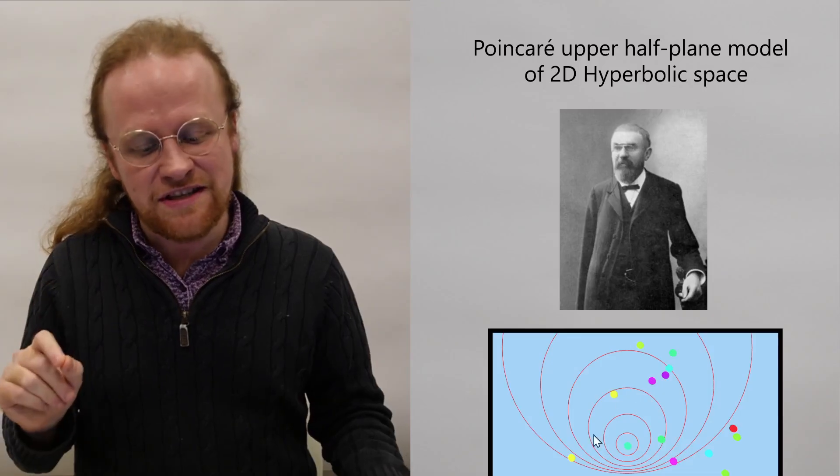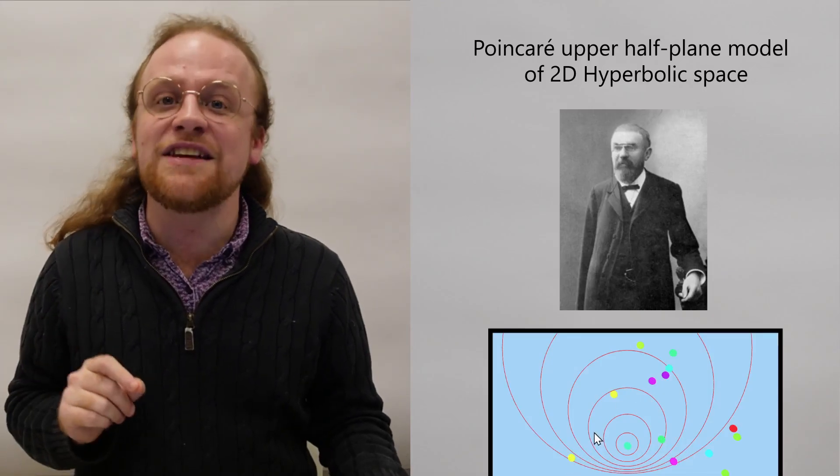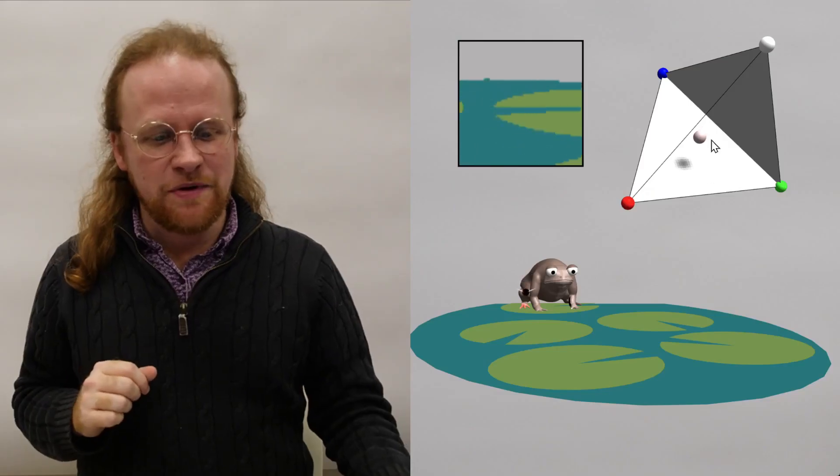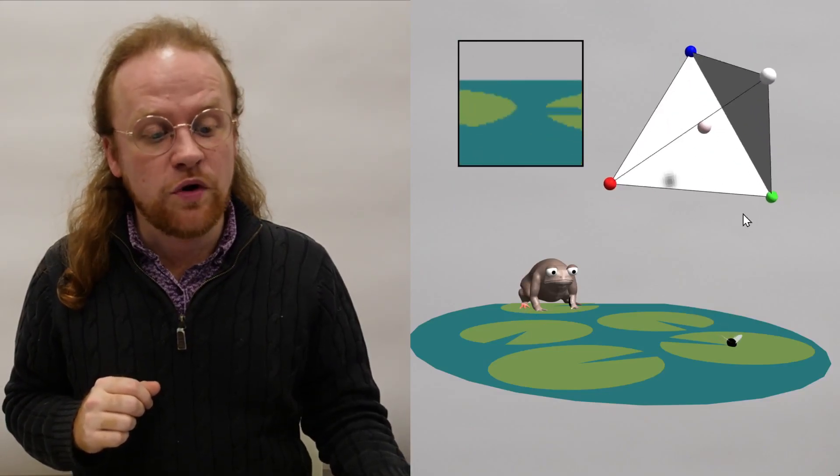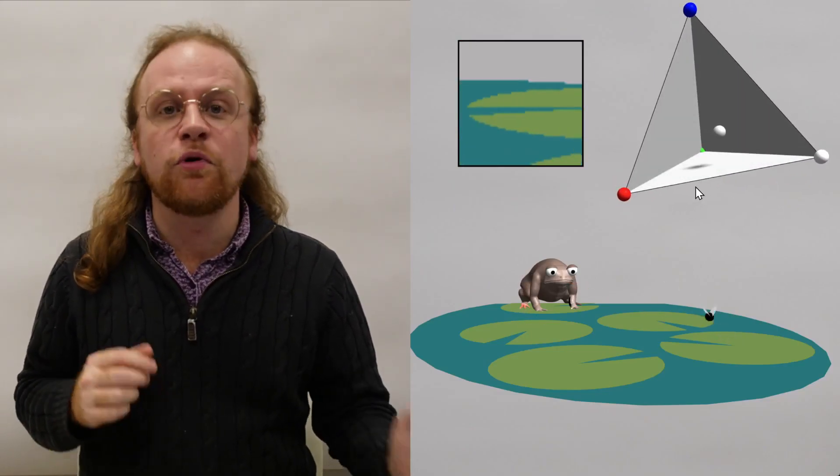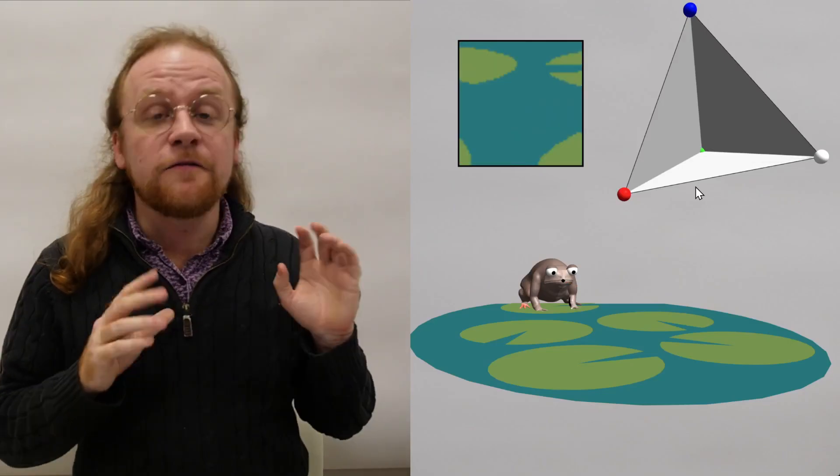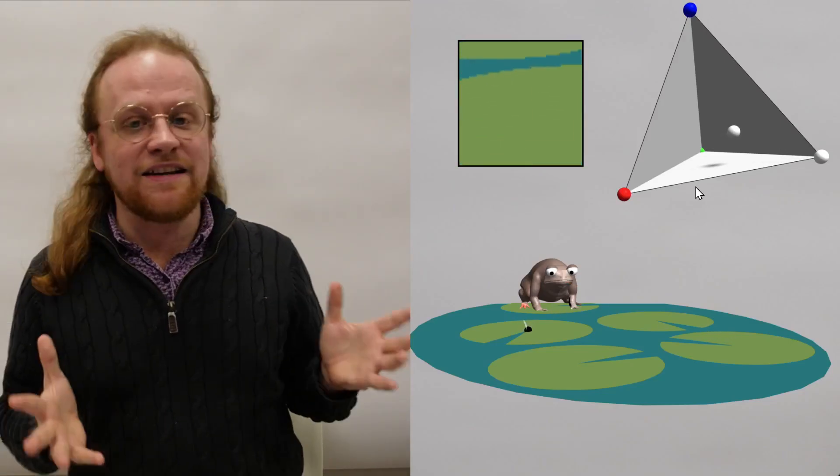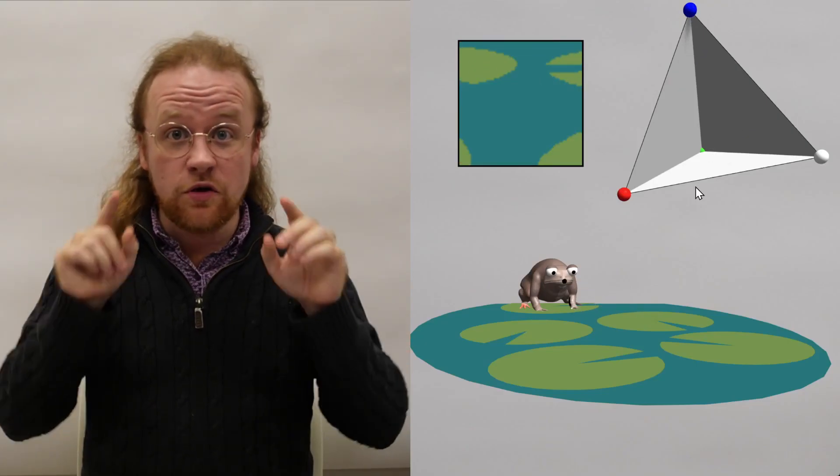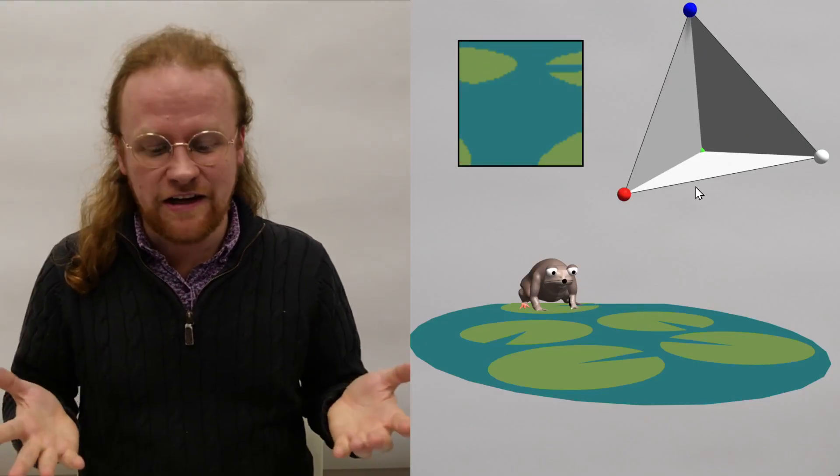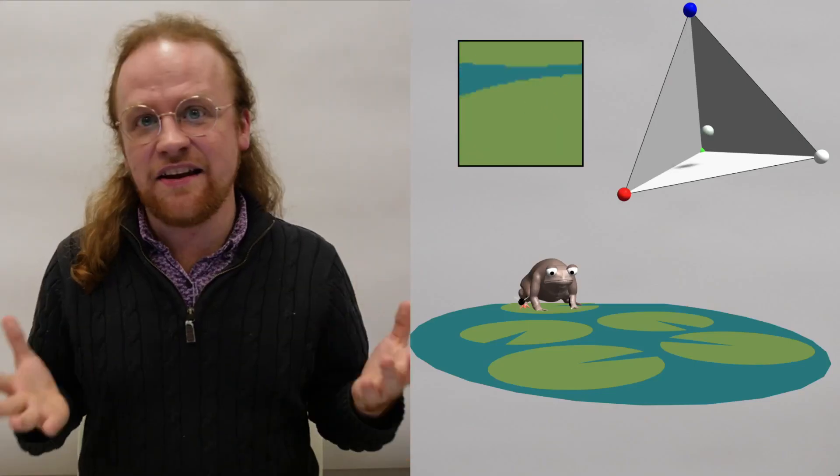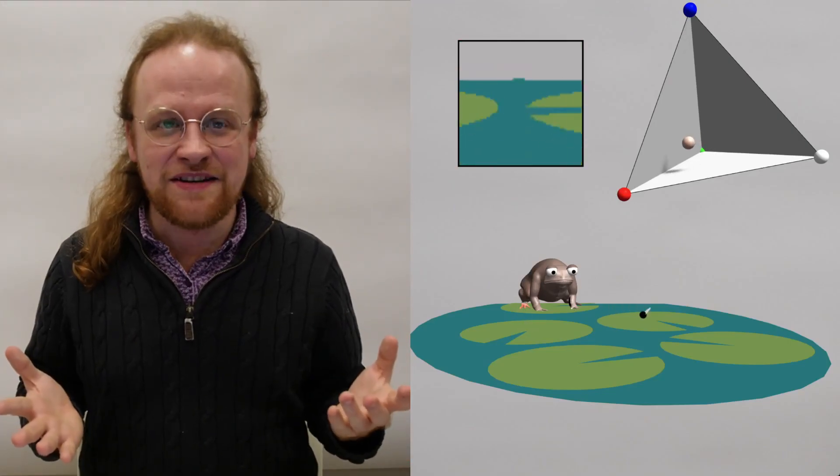I want to briefly show you a different belief space. This is a very important one in neuroscience that's called the probability simplex. In order to catch this fly, the frog is doing things called saccadic eye movements. Those are the movements that your eyes do when you're looking for something, like looking for your keys on your desk.